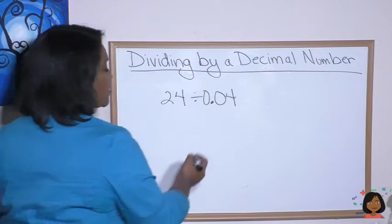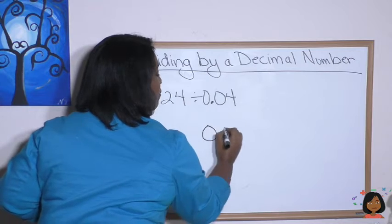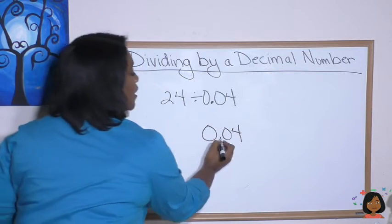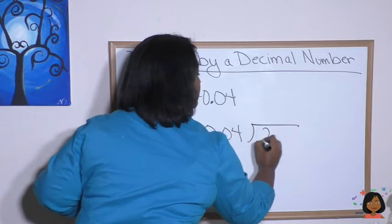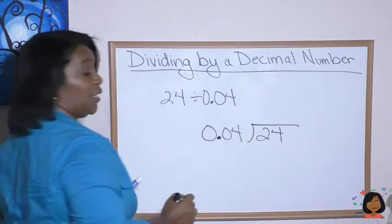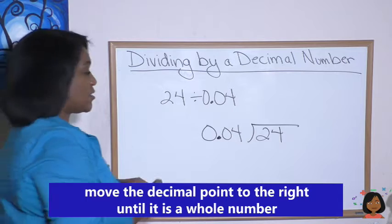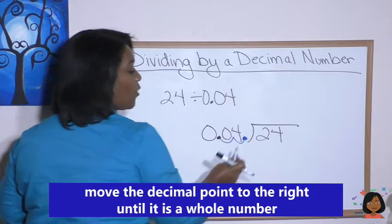So we know that our divisor is going to be on the outside, 0.04. And on the inside is our dividend. We have a 24. Here we go. We're going to move this two spaces to the right to clear it. Now it's behind the four.